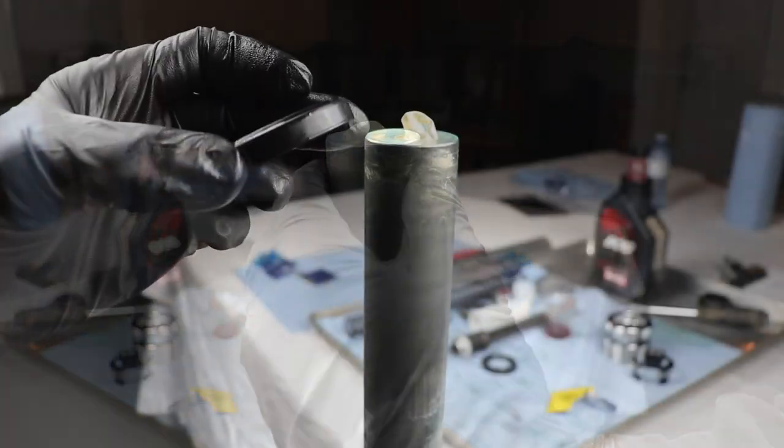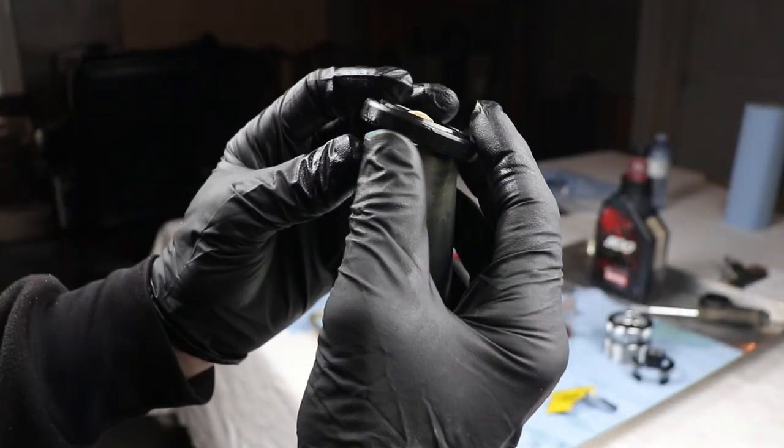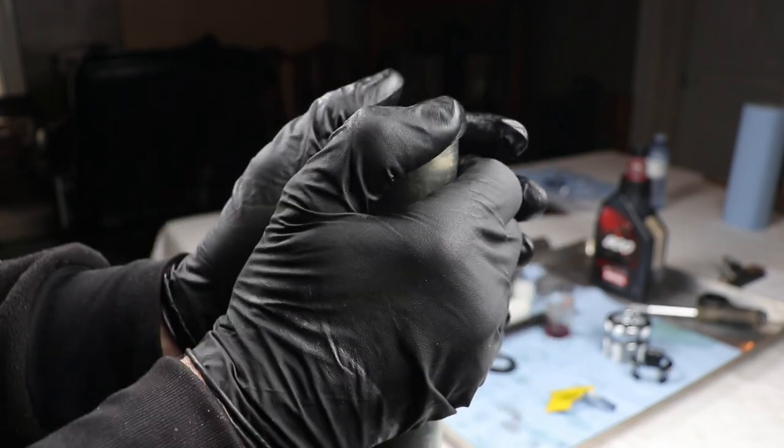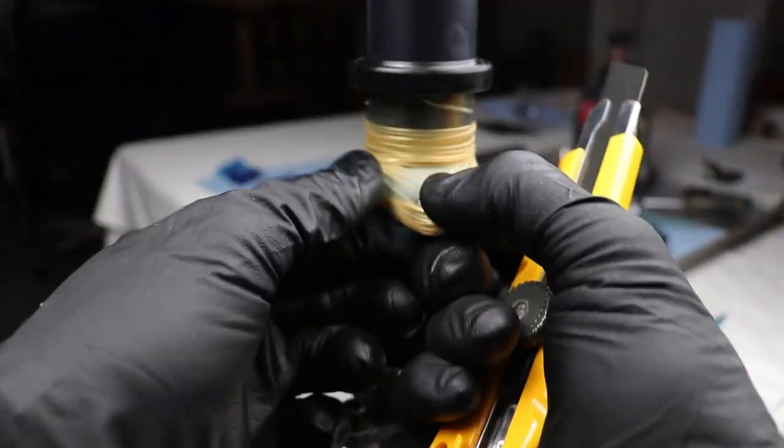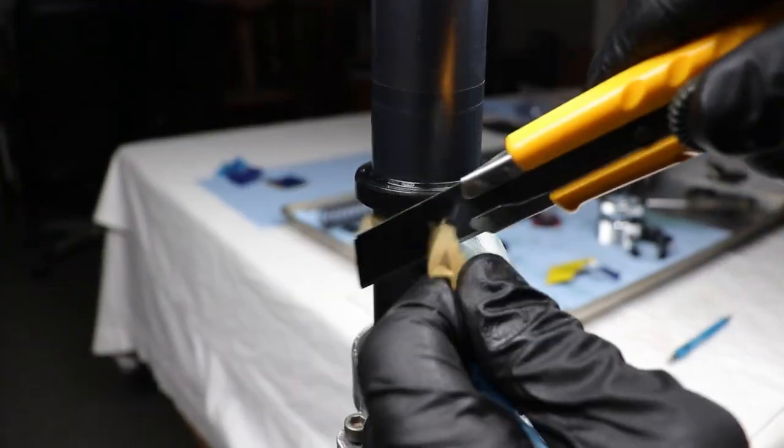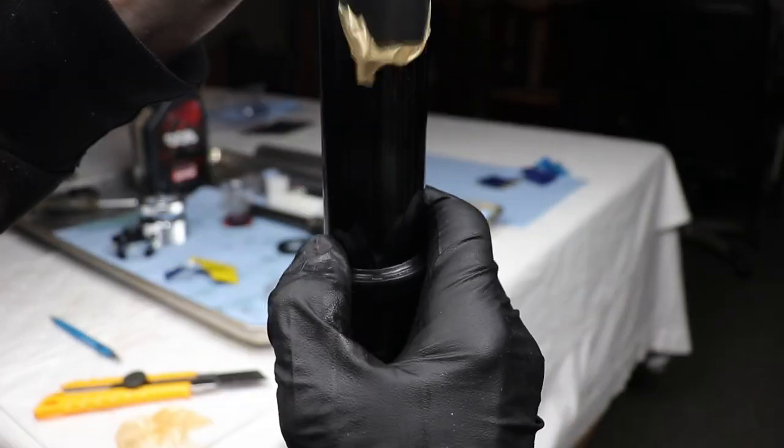Now watch how easy this seal goes on. A little bit of pressure, no chance of cutting it. Perfect. Slide it down, nice. Just cut away the extra, they're all good. Remember, don't use the ribbed ones, they're no good for this.